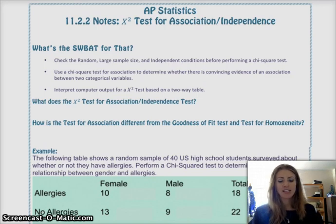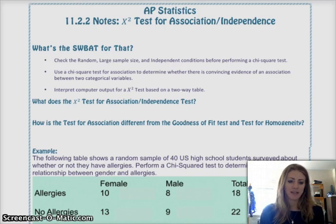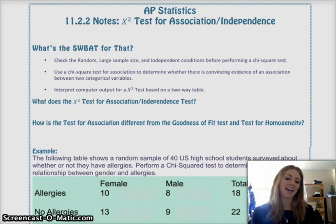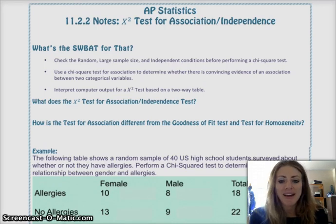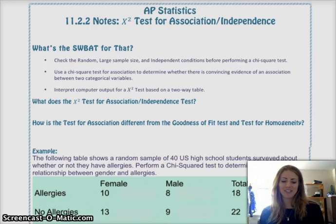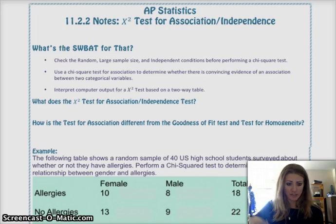So, that's what we're going to do today. Check the random, large sample size, and independent conditions. Basically, do the state, plan, do, and conclude thing. Again, surprise, surprise! And then we're going to look at what the difference is between this and the other tests that we've done so far.